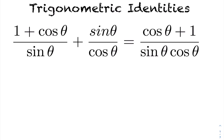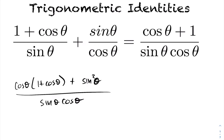For this first trig identity, we'll start off working with the left hand side of the equation. We want to show that it equals cos theta plus one, all divided by sine theta cos theta. One common first technique is to get a common denominator, so let's go ahead and do that.